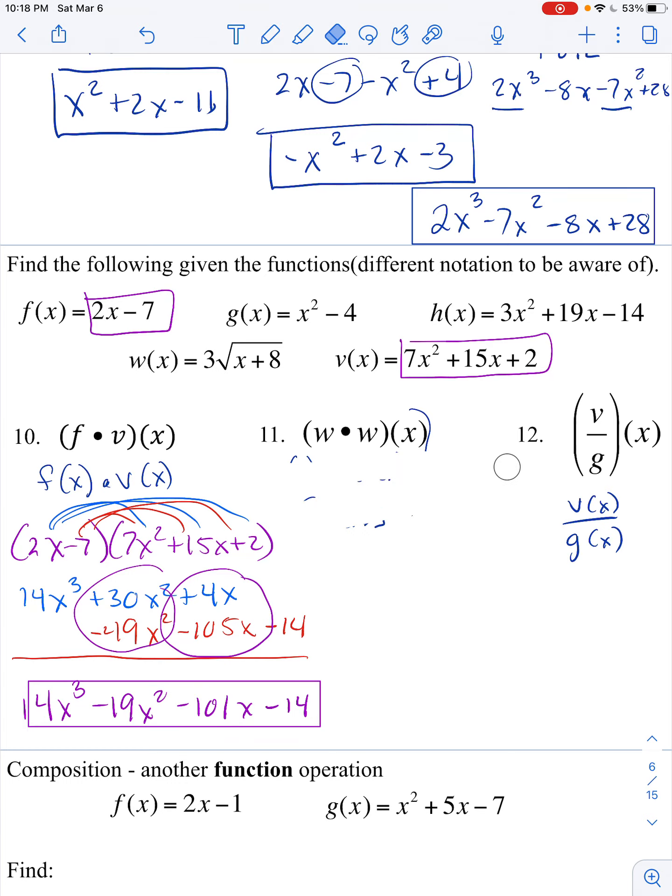Let's see. So what is w of x? This. And I'm going to multiply that by itself. This looks tricky, but it's going to be actually pretty slick. This is going to be 3 times 3, so 9. And then this is the square root of x plus 8 times square root of x plus 8. And we have learned the square root of something times the square root of that same thing equals that thing, but without the square root. So this product simply becomes x plus 8.